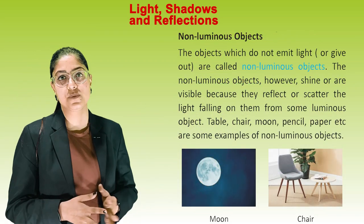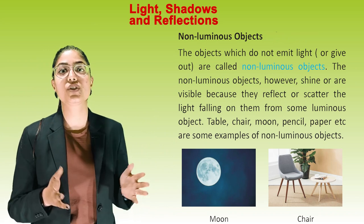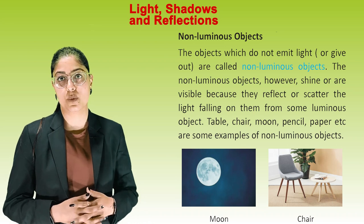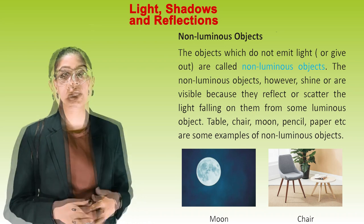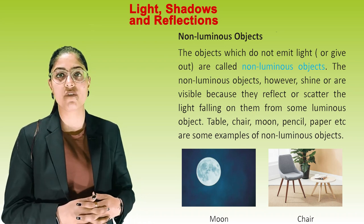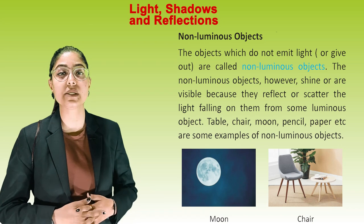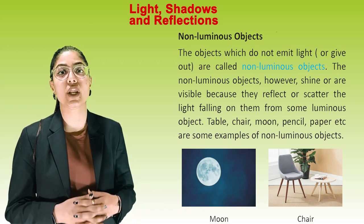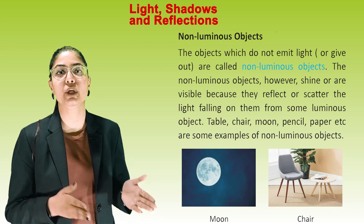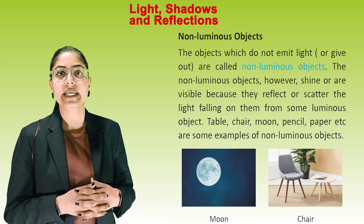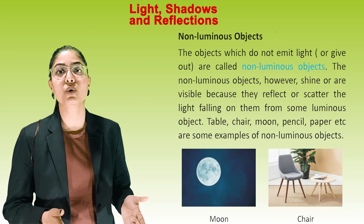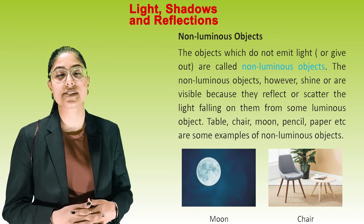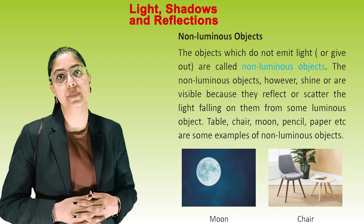Non-luminous objects. The objects which do not emit or give out light are called non-luminous objects. Non-luminous objects, however, shine or are visible because they reflect or scatter the light falling on them from some luminous objects. Table, chair, moon, pencil, paper, etc. are some examples of non-luminous objects.